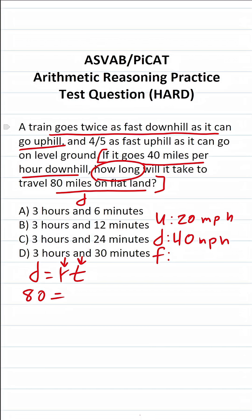And we know it goes four-fifths as fast uphill as it can go on level ground. So in other words, 20 miles per hour, its uphill speed, is going to be equal to four-fifths as fast as it can go on flat land, or F. So by solving this equation here for F, we'll get our rate that we can plug in.